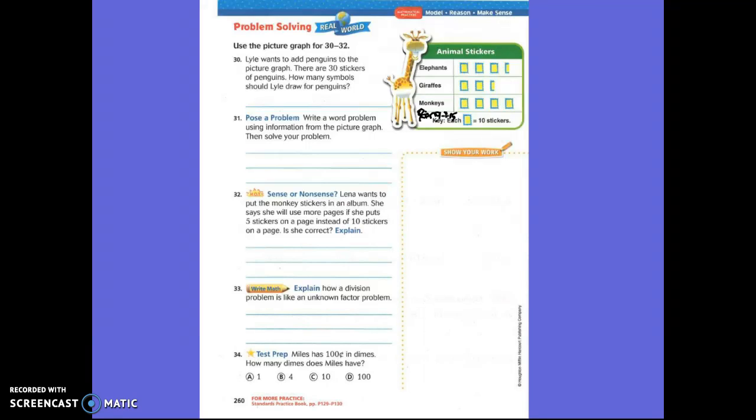He wants to put penguins down here or something. Now, penguins has thirty stickers. But look, this is a picture graph, where pictures stand for a certain amount of numbers. What does the picture stand for, the stamp picture? Ten. So, how many stamp pictures would you have to make thirty? Write it down. How many symbols should a file draw? Write the answer down and make sure you have a label.